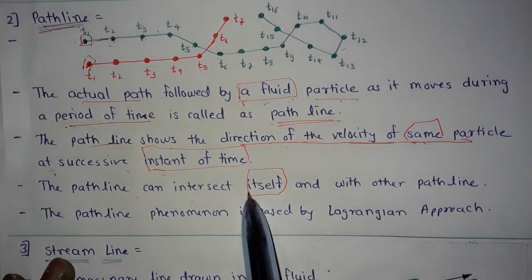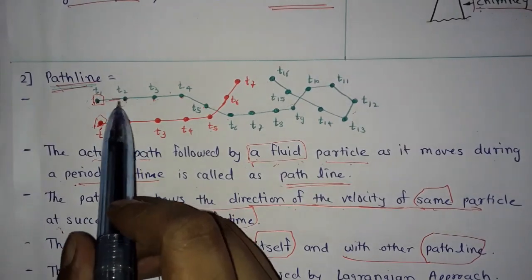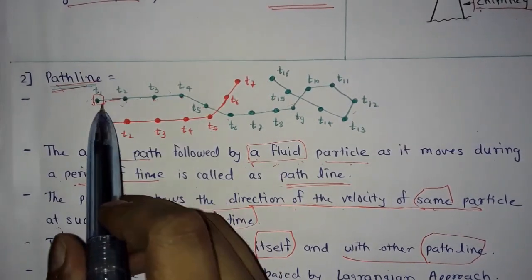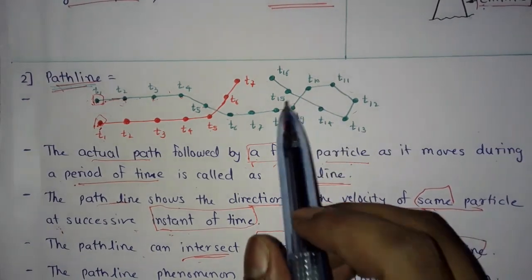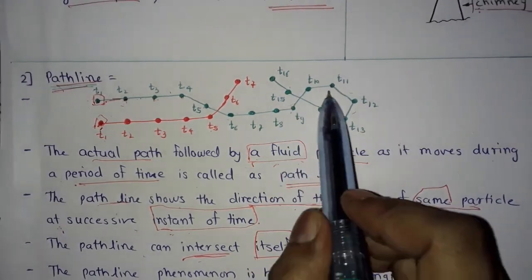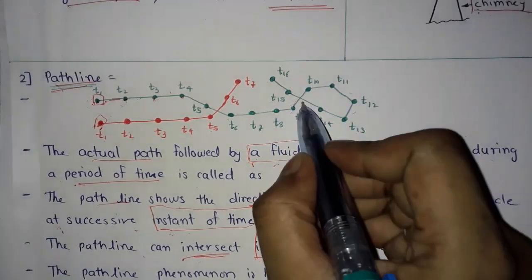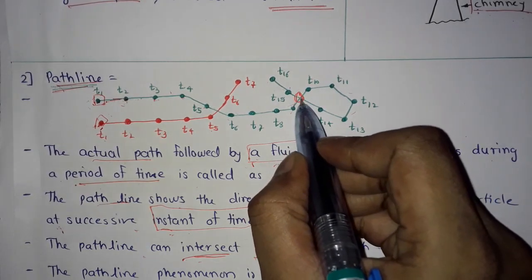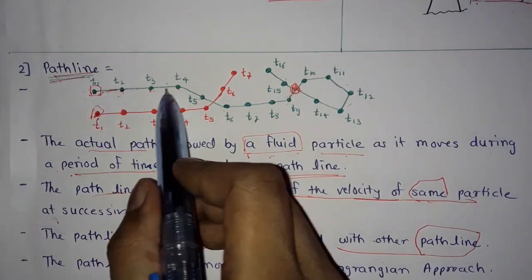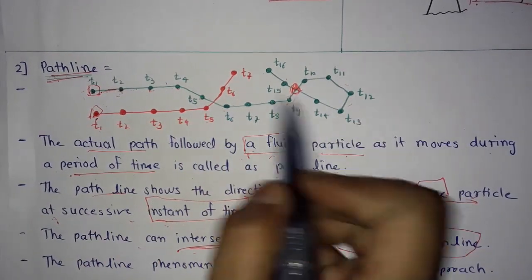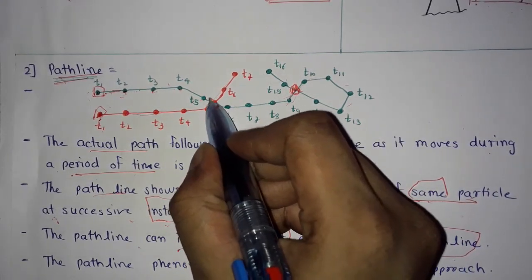Path line can intersect itself and with other path lines. The green particle's path line can intersect within itself. Additionally, one particle's path line and another particle's path line can intersect each other at a common point.